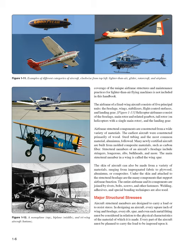Airframe structural components are constructed from a wide variety of materials. The earliest aircraft were constructed primarily of wood; steel tubing and the most common material, aluminum, followed. Many newly certified aircraft are built from molded composite materials such as carbon fiber. Structural members of an aircraft's fuselage include stringers, longerons, ribs, bulkheads, and more. The main structural member in a wing is called the wing spar. The skin of aircraft can be made from a variety of materials ranging from impregnated fabric to plywood, aluminum, or composites. The entire airframe and its components are joined by rivets, bolts, screws, and other fasteners. Welding, adhesives, and special bonding techniques are also used.